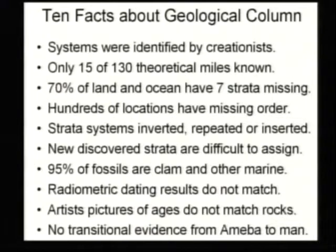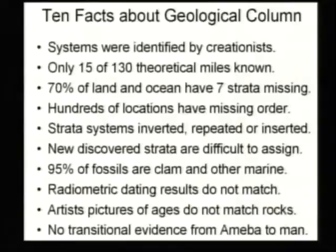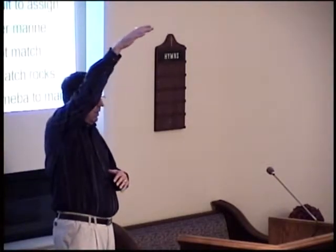Seventy percent of the land and oceans have seven strata missing. Hundreds of locations have missing order. The layers are inverted, repeated, or inserted. There are some problems with the rock layers. And by the way, if man started from an amoeba and became Adam, there should be all kinds of transitional forms in the rock layers — but there are no transitional forms in the rock layers.